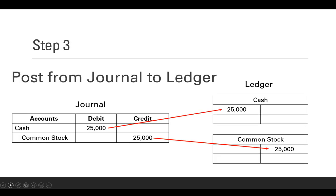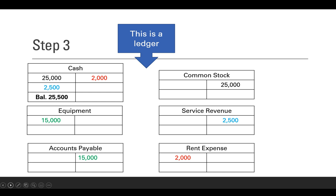Now we're going to post to the ledger. The ledger has a list of every single account that the company has. We're using a T-account here — it shows all of the debits and credits to that account and eventually its balance. No decision making here: if you have a debit in the journal, you put a debit in the ledger. If you're doing this by hand in a class, make sure you check off all of your items because it's easy to miss one or put it in the wrong place.